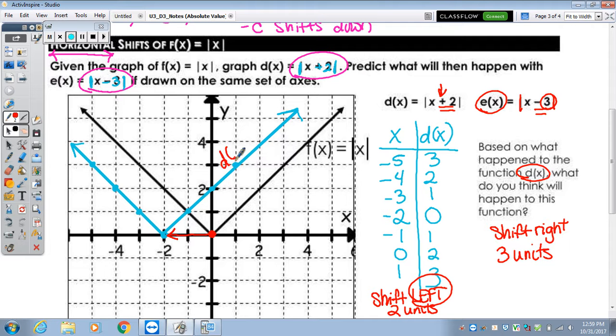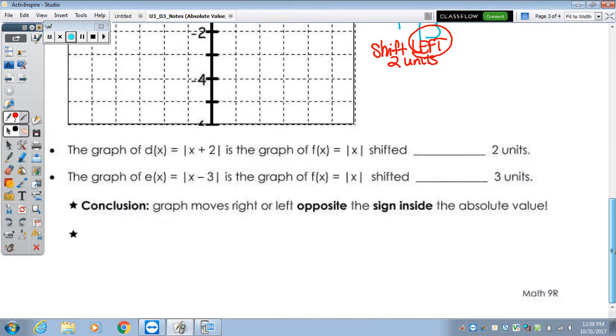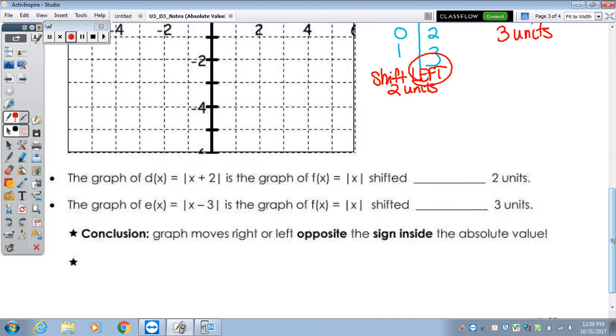I'm going to go back and label this graph d of x. Everything's labeled, so let's look at the bullets. It says the graph of d of x equals the absolute value of x plus 2 is the graph of f of x. So we took that graph, that parent function, and because of the plus 2, we moved left. It's opposite. And then e of x equals the absolute value of x minus 3. We took the graph of f of x equal to the absolute value of x and shifted it right 3 units.